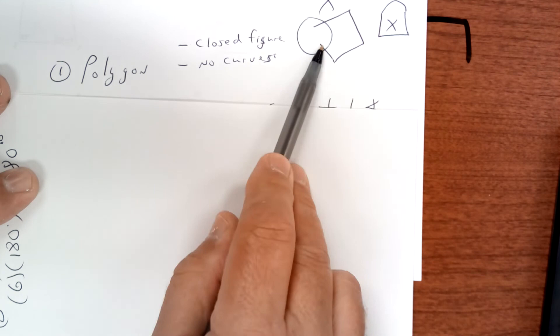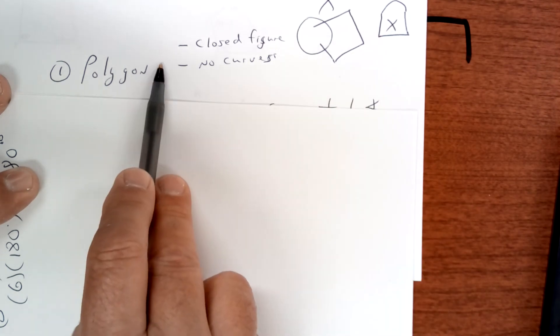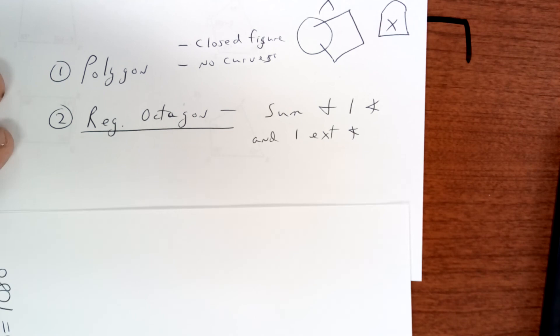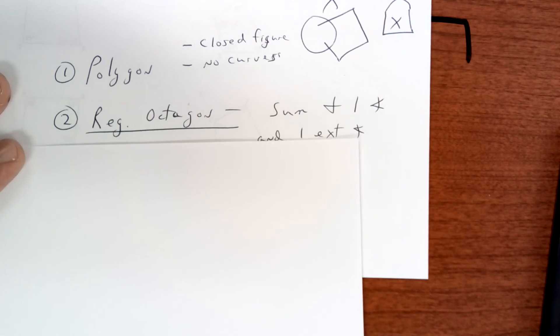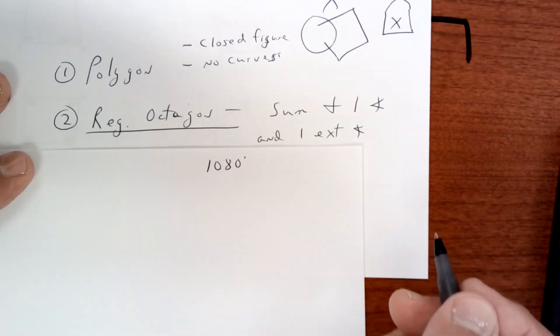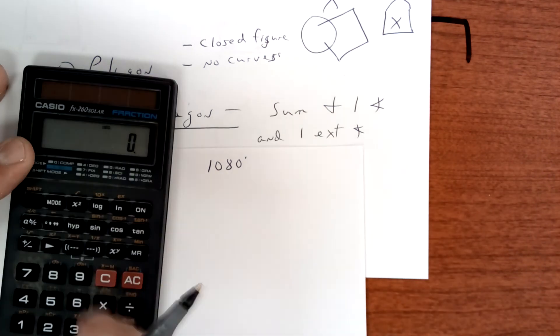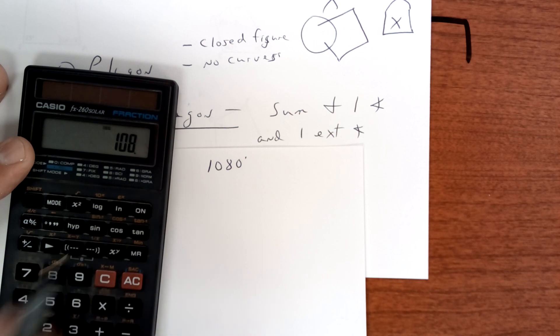A regular octagon means that the sides and angles are equal. So we're going to do 1080, which is what we figured out earlier for an eight-sided figure. And since they're all the same, we can divide by eight.